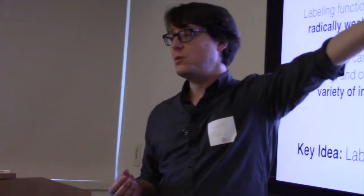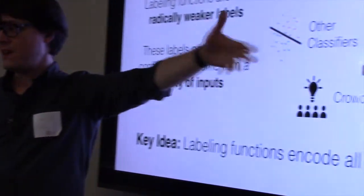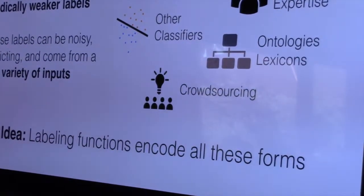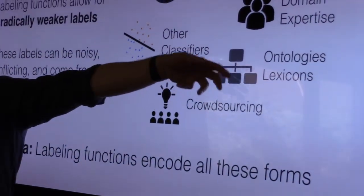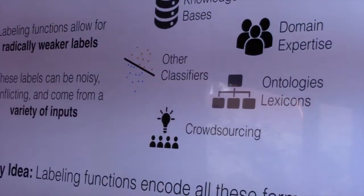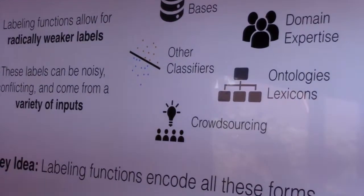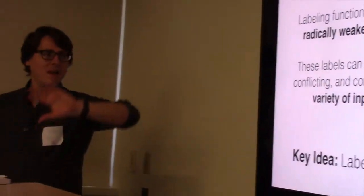These things could include knowledge bases, other weak classifiers like taggers, individual workers in a crowdsource setting, structured resources like dictionaries or lexicons, and of course, common sense domain knowledge that's best expressed in some sort of collection of rules or heuristics. Labeling functions sort of subsume their generalization of all these types of ideas.